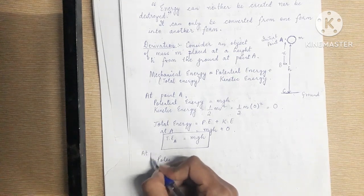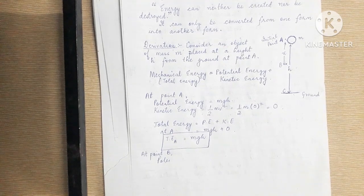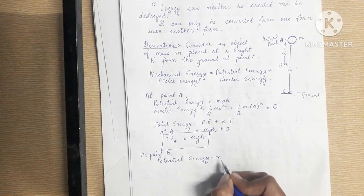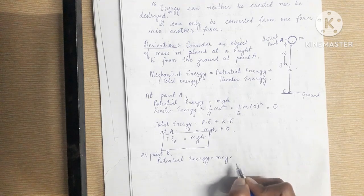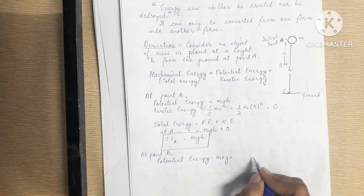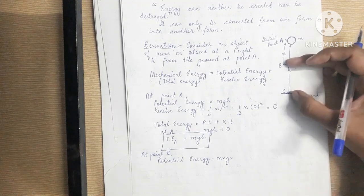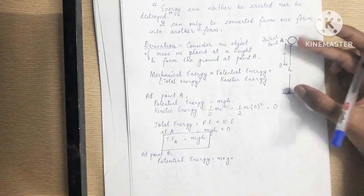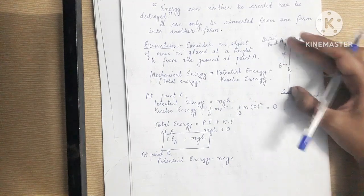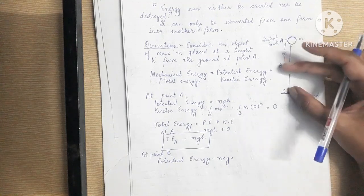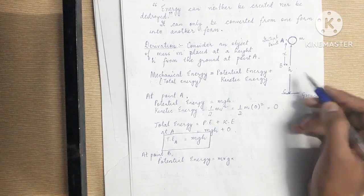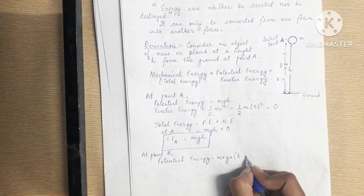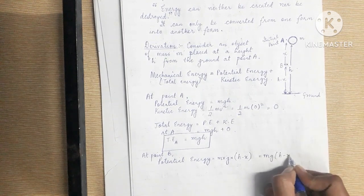Now let's find the total energy at point B. At point B, the potential energy = m × g × (h − x), where x is the distance fallen from A to B, so the height remaining above ground is (h − x). Therefore, potential energy at B = mg(h − x).